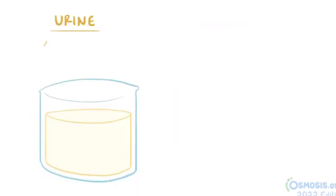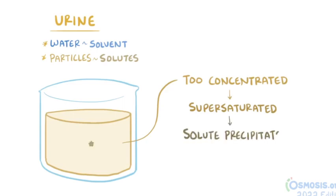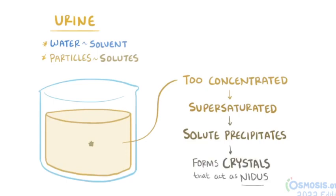Urine is a combination of water, which acts as a solvent, and all sorts of particles or solutes. When certain solutes become too concentrated in the solvent, they become supersaturated. Urinary supersaturation of certain solutes results in precipitation out of the solution and the formation of crystals. Those crystals then act as a nidus, or a place where more solutes can deposit, and over time it builds up a crystalline structure.